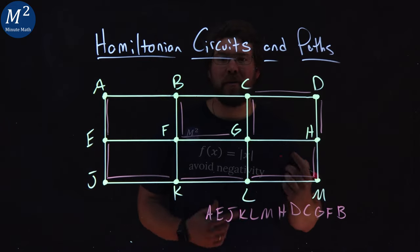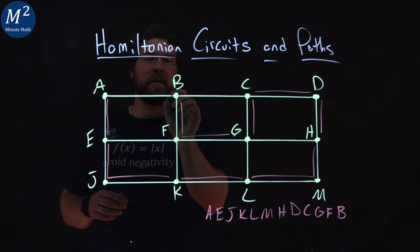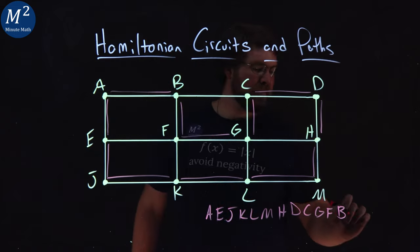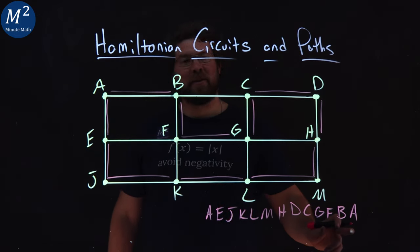If I want to make this a Hamiltonian circuit, all I have to do is complete that from B to A and there we have a Hamiltonian circuit.